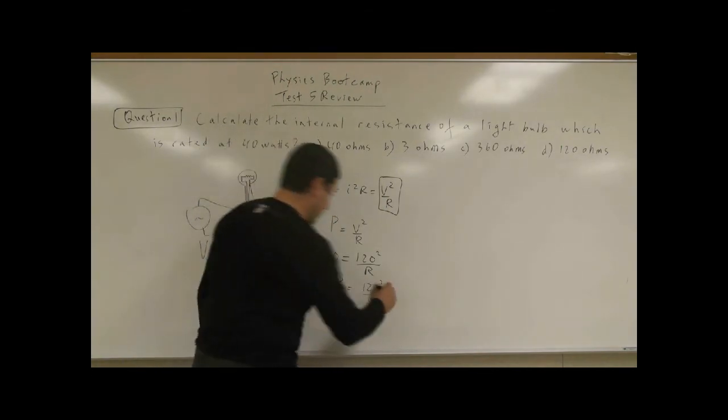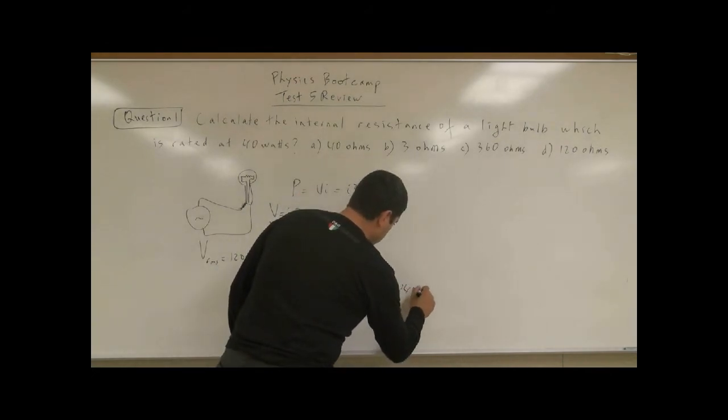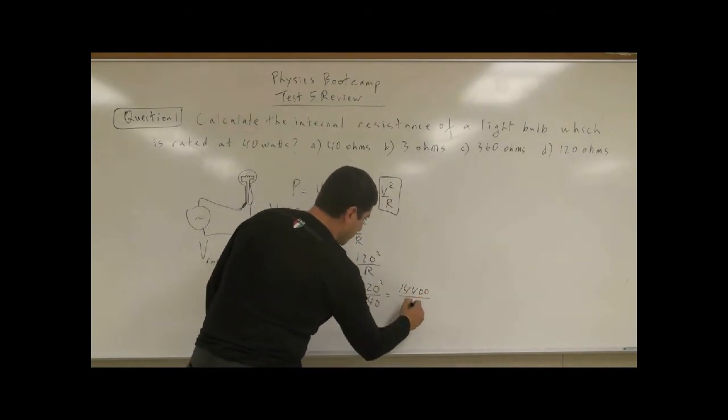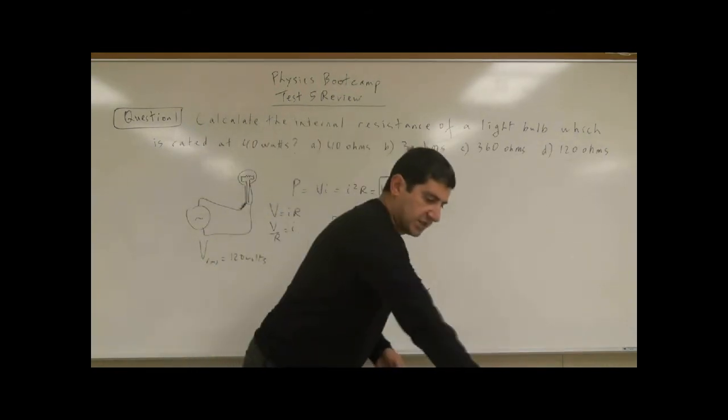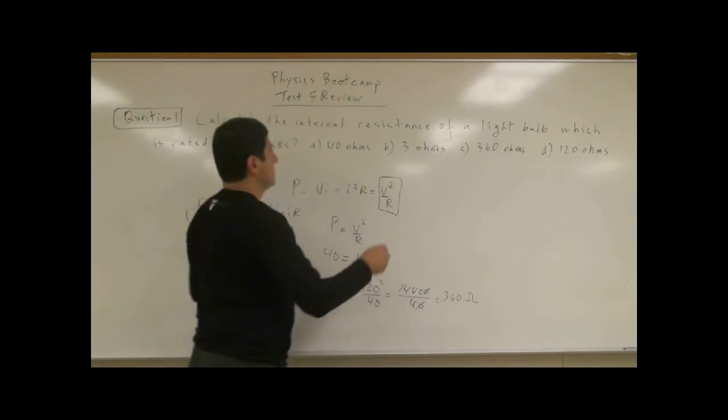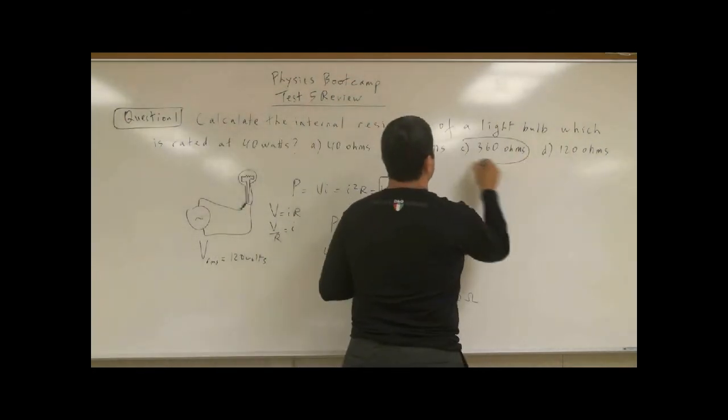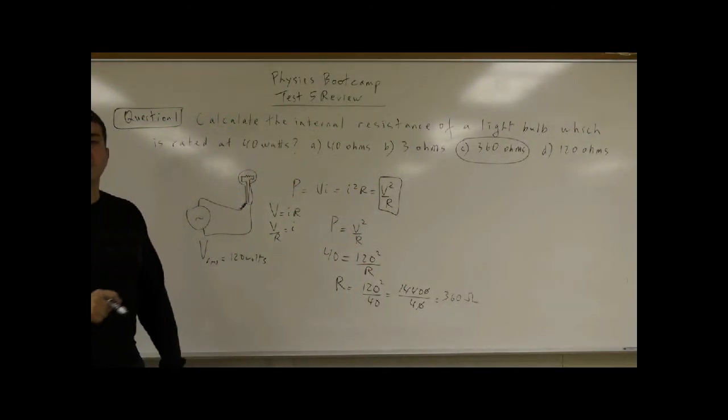120 squared, what is that going to be? Well, 12 times 12, that's 144. Add two more zeros over 40, so you're going to get 14400 over 40. Let's divide that. It equals 360 ohms. So the answer is C.